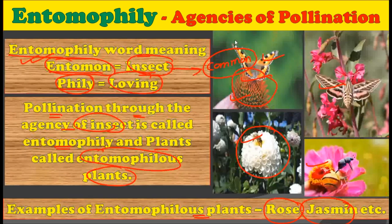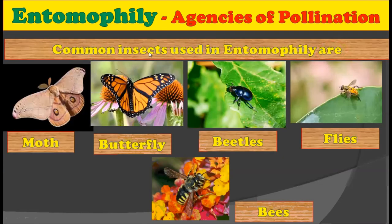This is a very common type of pollination because most pollination occurs with the help of insects. As you can see in these four pictures, different types of insects are used to pollinate flowers — such as butterflies, moths, bees, beetles, etc. All these insects are used for transferring pollen grains from the anther to the stigma of another flower.